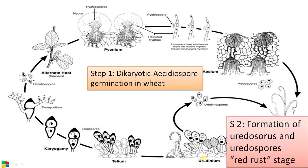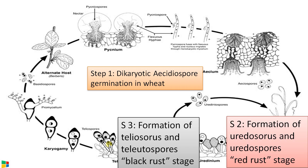With a change in season to winter, uredospores cannot survive on the uredosorus. Another type of spore is formed called the teliospore, which is a two-celled, binucleate, thick-walled spore. This stage is called the black rust stage because of the black color of the spore.